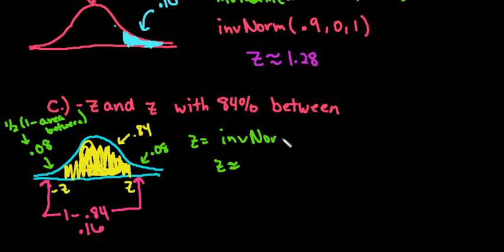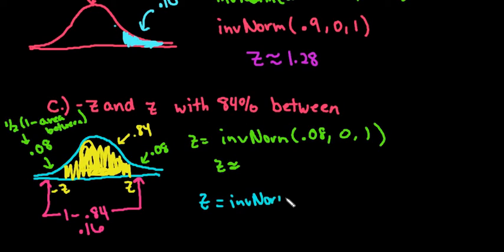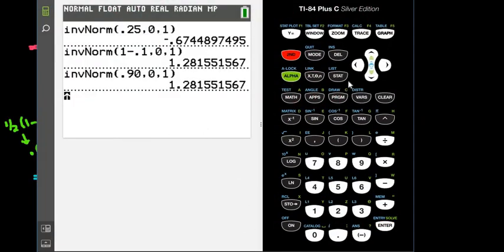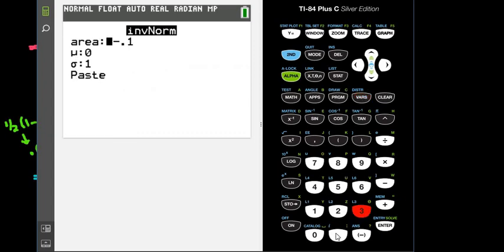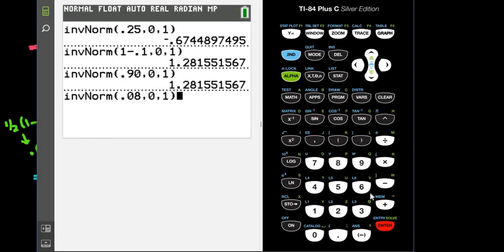In the calculator, to get the negative z-score, we do inverse norm of 0.08. We end up with negative 1.405. When the third decimal is a 5, it's best to report it to three decimal places, so I'll report this one as three decimal places.